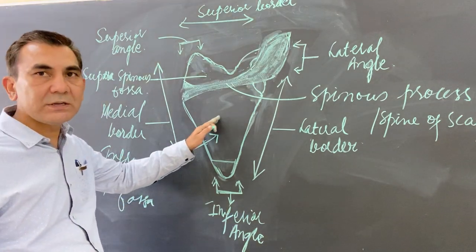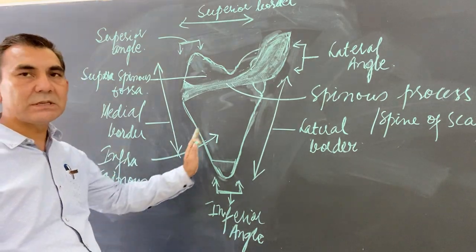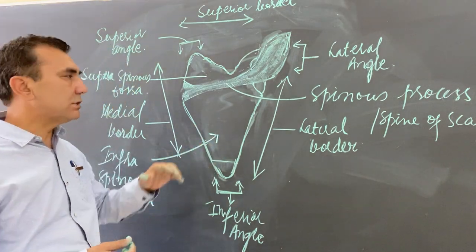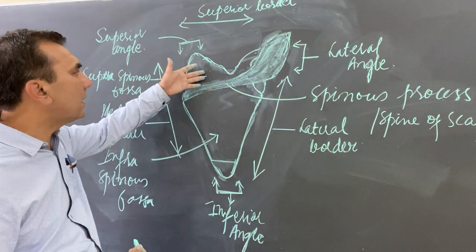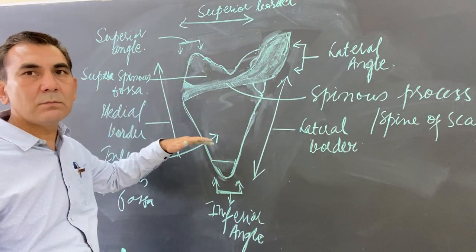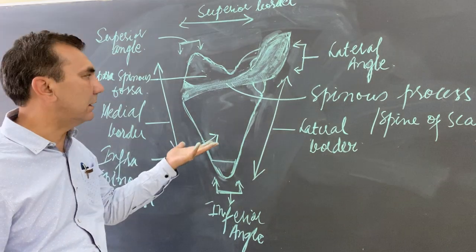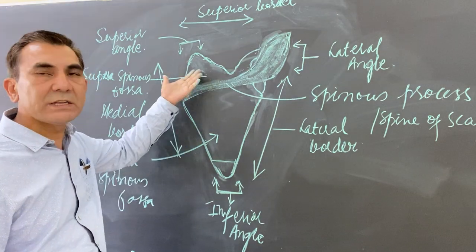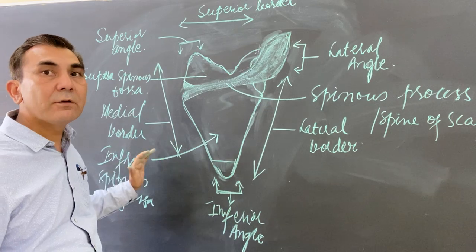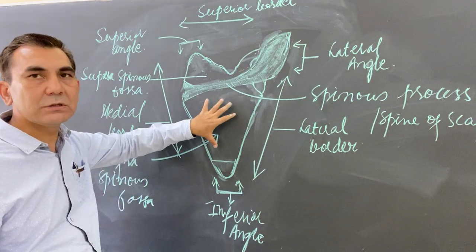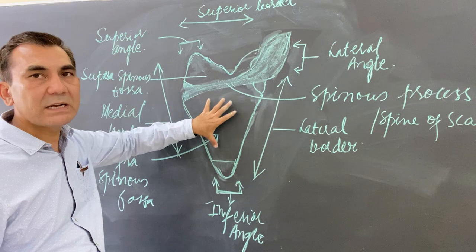The spine of the scapula divides the posterior portion of the scapula into two parts. The upper part, which is above the spine of the scapula, is called the supraspinous fossa, where the supraspinous muscle attaches. The portion below the spine, which is about two-thirds of the posterior surface of the scapula, is called the infraspinous fossa.